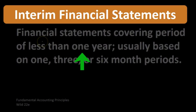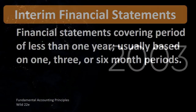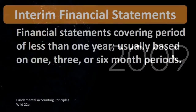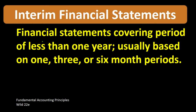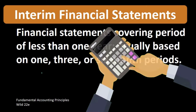We are talking about financial statements — the typical financial statements we often think of as covering one year, a 12-month time period — but oftentimes we're going to have timeframes that are other than 12 months. Typically quarterly financial statements, which would be every three months — 12 divided by three.